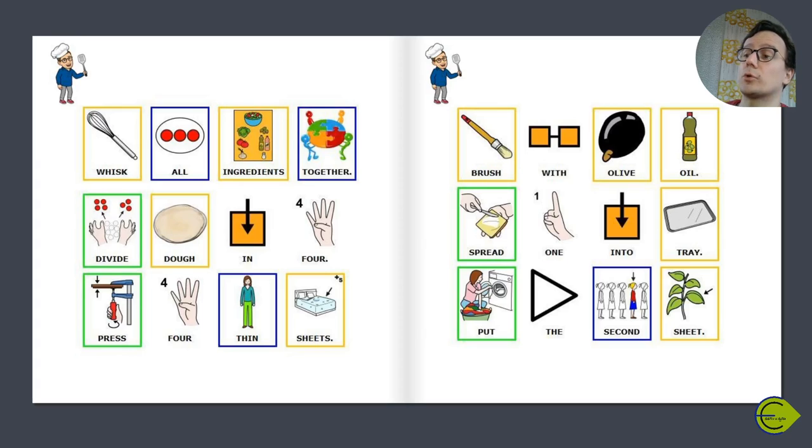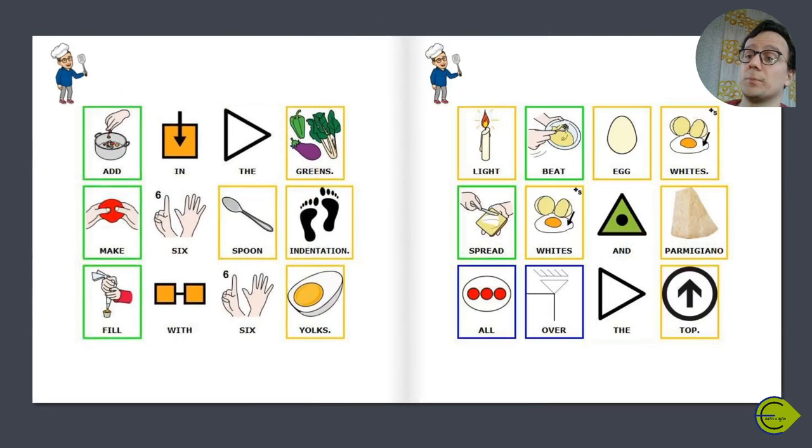Brush with olive oil, spread one into tray, put the second sheet over it, add in the greens, make six spoon indentations.